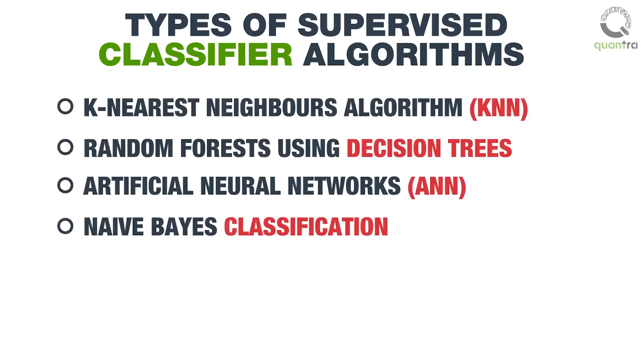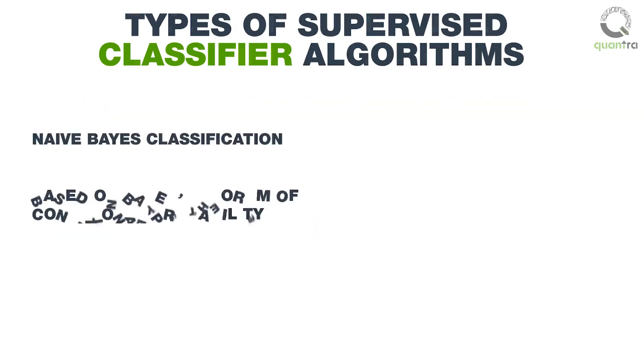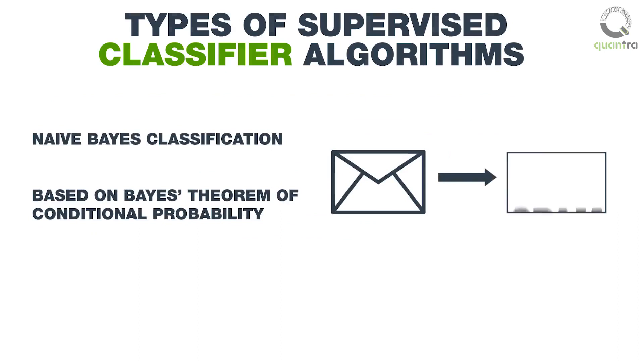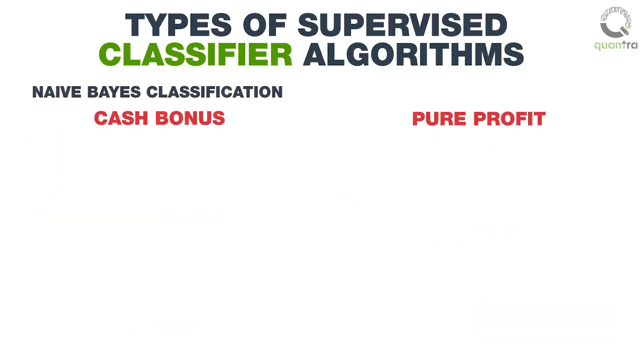The last classifier algorithm which we will discuss is the naive Bayes classification. This algorithm is based on Bayes' theorem of conditional probability. Consider the example of classifying an email as spam or not. Probabilities that a mail is spam, knowing that the words like cash bonus, pure profit, etc. are in it, are determined.